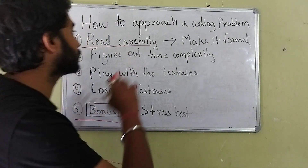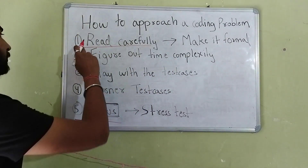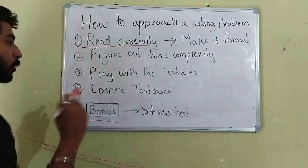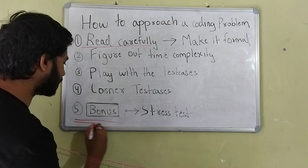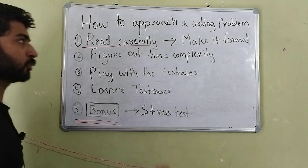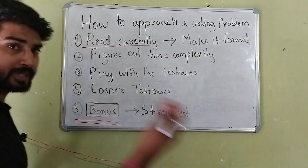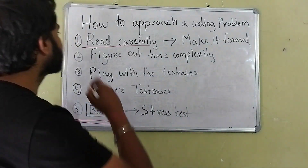So how to approach a coding problem in five steps broken down, and one more step at the last is a bonus for you. So let's get into it.